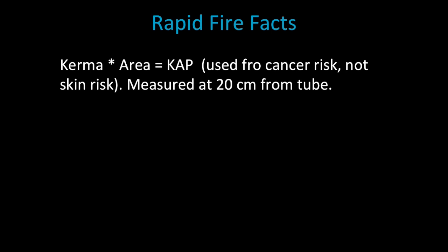Kerma times area will give us our kerma area product, which is used for cancer risk, it's not used for skin risk, because since it's measured at 20 centimeters from the tube and it takes into account the area, I can have two different ways of having this. I can have a very intense x-ray beam but a small area, for example four grays and four centimeters, four times four gives me 16, so my kerma area product is 16 for that example. However, if I have a lower energy x-ray of one gray but I have a 16 centimeter area, one times 16 will also give me 16, and therefore both of those setups have the same amount of kerma area product and the same risk for stochastic reactions. However, the one with the most concentrated beam has the higher risk for radiation in the skin.